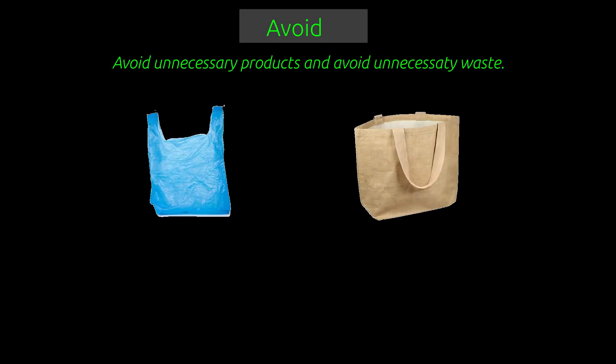If we avoid unnecessary things, we can avoid unnecessary waste. We can stop waste from entering our environment by avoiding products which cause pollution and are unnecessary. For example, plastic and polythene are very dangerous waste materials, so we should always avoid using them and instead start using natural fiber bags.